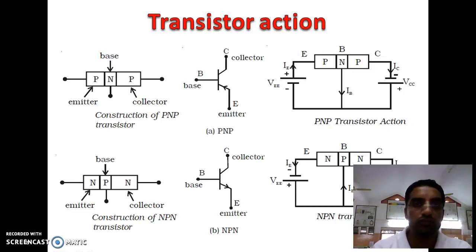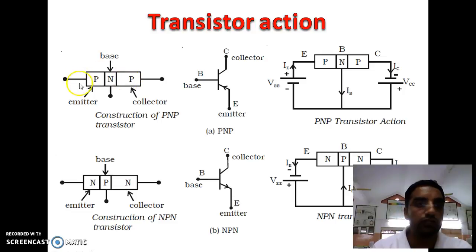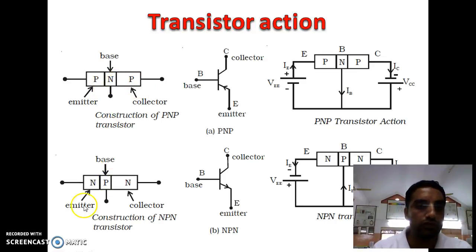We know that transistor is the transfer plus resistor. Trans means transfer the signal from low resistance to the high resistance. Transistor has three different layers, three different terminals, and is a two-junction semiconductor device. There are two different types of transistors: one PNP transistor and second one NPN transistor.